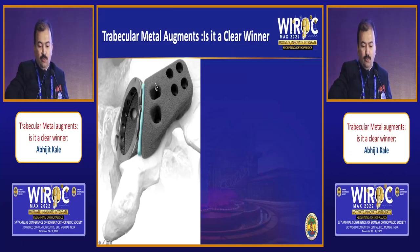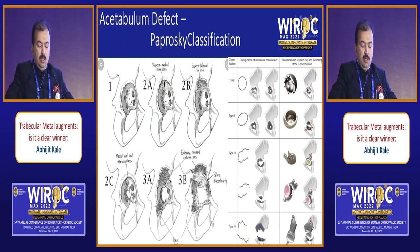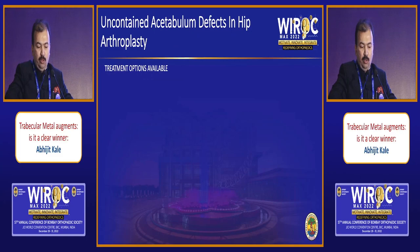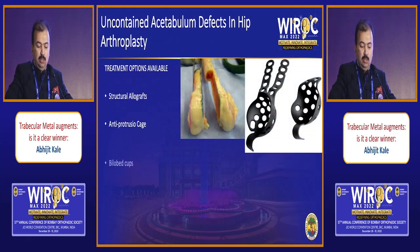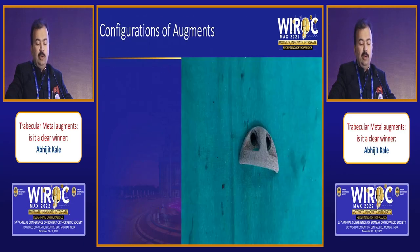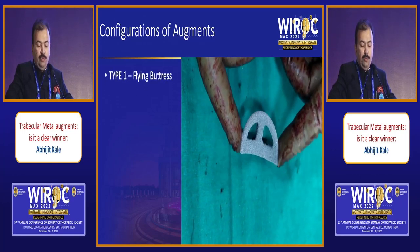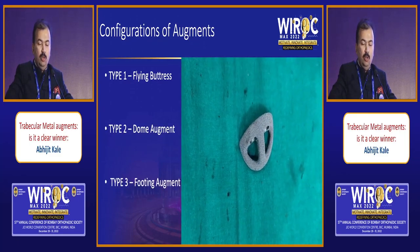From Jumbo cups we move to the philosophy of trabecular metal augments. The Paprosky classification is useful for management options. For uncontained acetabulum defects, the options available are structural allografts, anti-protrusion cages like Burch-Schneider, bilobed cups, triflange components, or porous metal augments. The configurations in which augments can be placed are: as a flying buttress, a dome augment, or a footing augment.